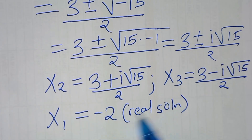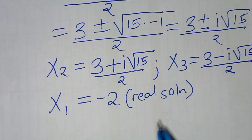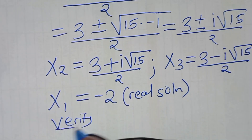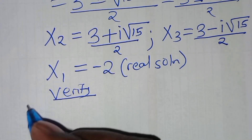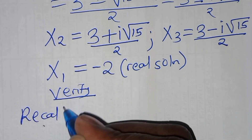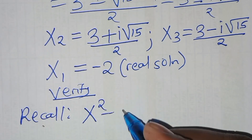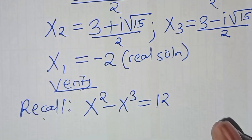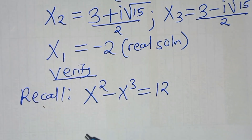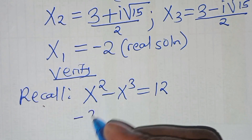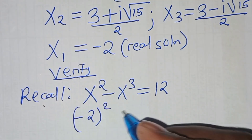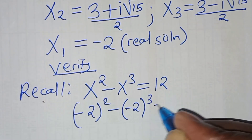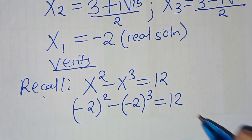Let's verify that this real solution satisfies the equation. We have that x to power 2 subtract x to power 3 should give us a value of 12. Substituting x equals minus 2: minus 2 squared subtract minus 2 to the power 3 should give us a value of 12.